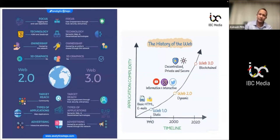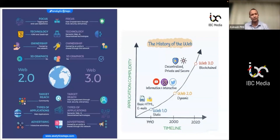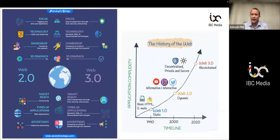Then we had Web 2.0, where we talked about dynamic information, machine learning picking up, and a lot of data being shared and learned upon. For example, you go on Amazon, search for something, and you get recommended products — they learn from your transaction history.